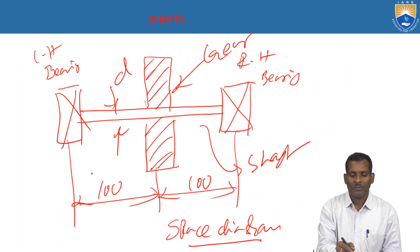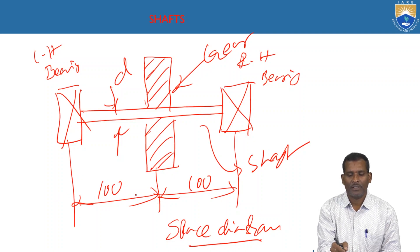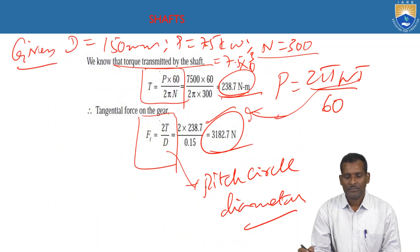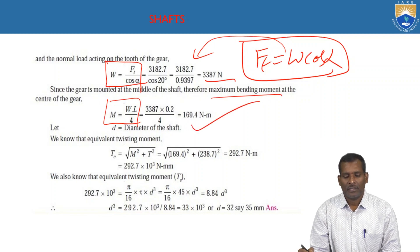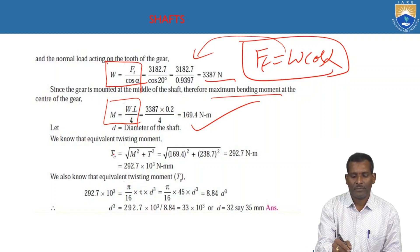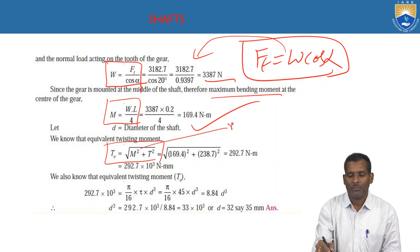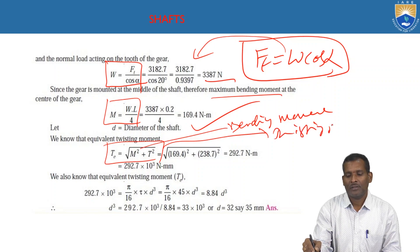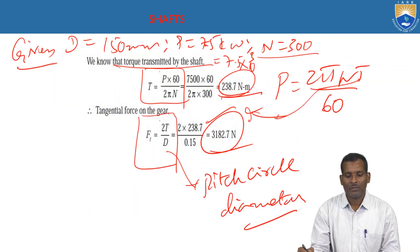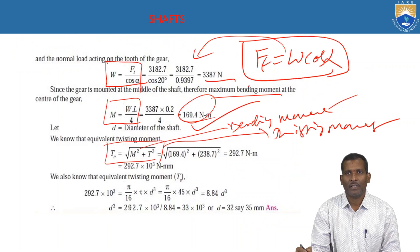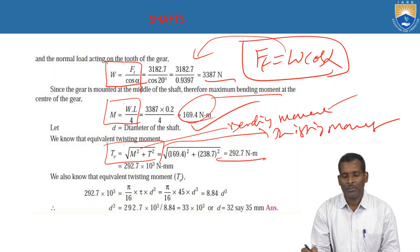The total length L is 200 mm, because from the left-hand bearing to the gear is 100 mm and from the gear to the right is 100 mm. So the bending moment M = 3387 × 200 / 4. The value obtained is 169.4 Newton-meters. The equivalent twisting moment is Te = √(M² + T²), where M is the bending moment and T is the twisting moment.